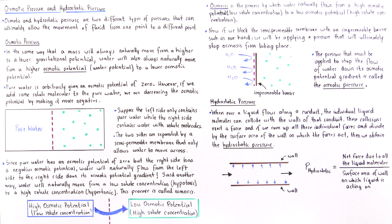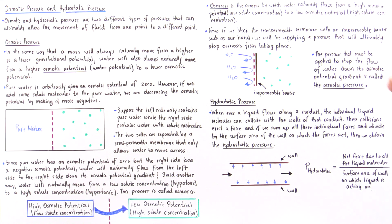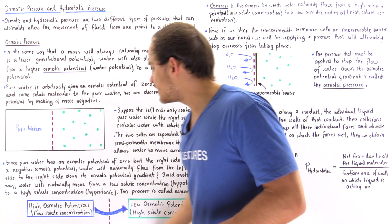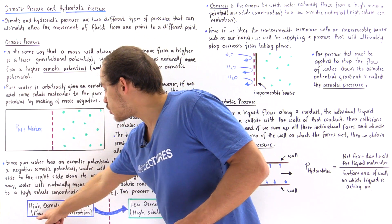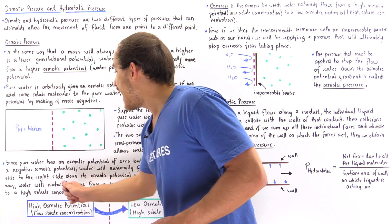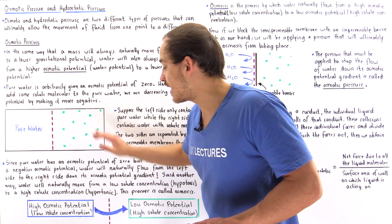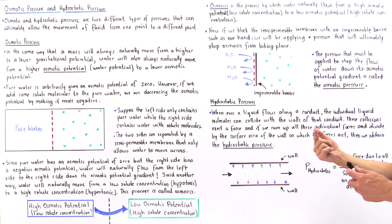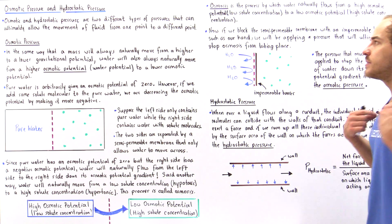Osmosis is the process by which water naturally flows from a high osmotic potential or low solute concentration to a low osmotic potential or high solute concentration. Water moves from the left side — high osmotic potential, low solute concentration — to the right side — low osmotic potential, high solute concentration. This natural movement down the osmotic potential gradient is osmosis.